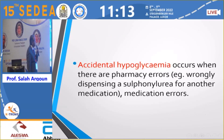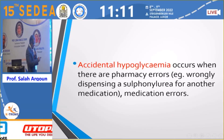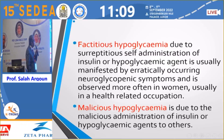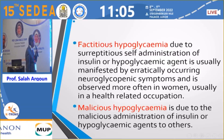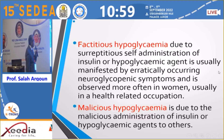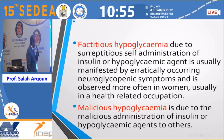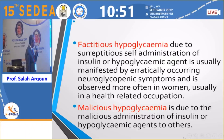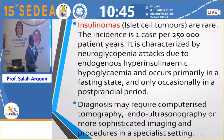Accidental hypoglycemia occurs when there are pharmacy errors or medication errors. Factitious hypoglycemia is the self-administration of insulin or sulfonylurea, and usually manifests with erratically occurring neuroglycopenic symptoms. Malicious hypoglycemia is due to the malicious administration of insulin or hypoglycemic agents such as insulin or sulfonylurea to someone else.